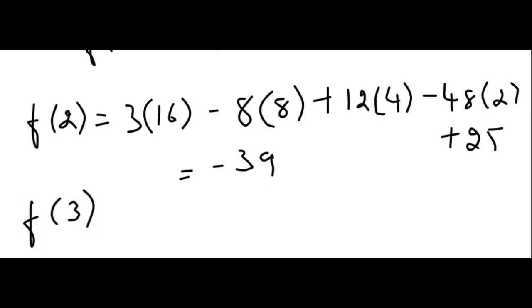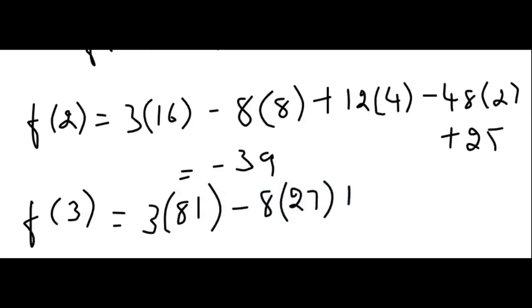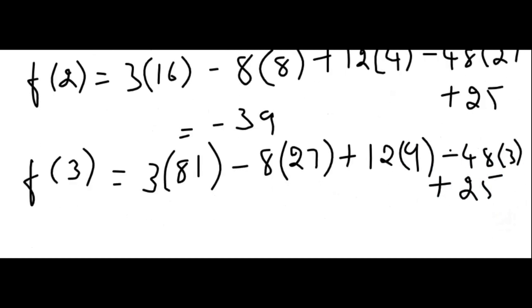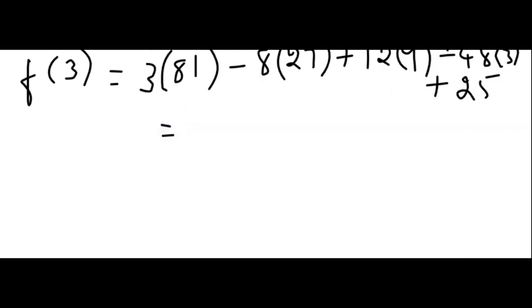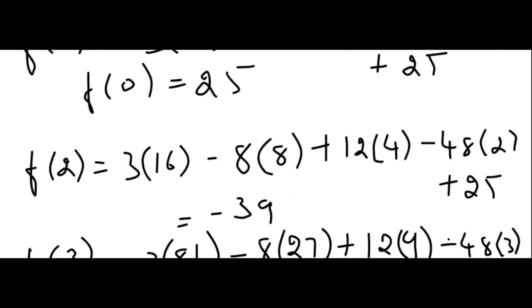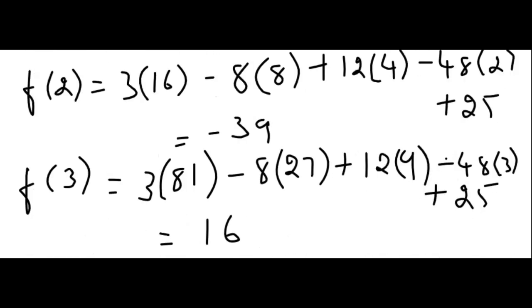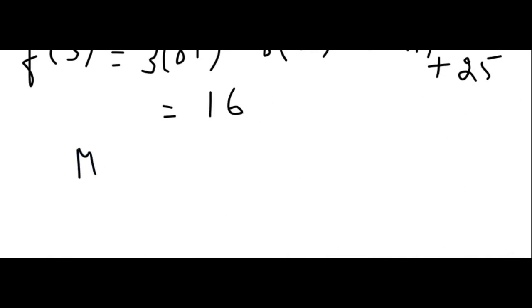For f(3): 3(81) − 8(27) + 12(9) − 48(3) + 25, which on simplification gives 16. From all three values — 25, −39, and 16 — the maximum value is 25 and the minimum value is −39.